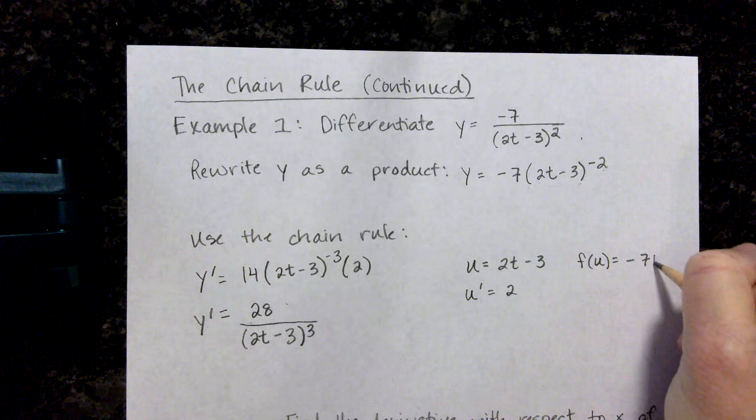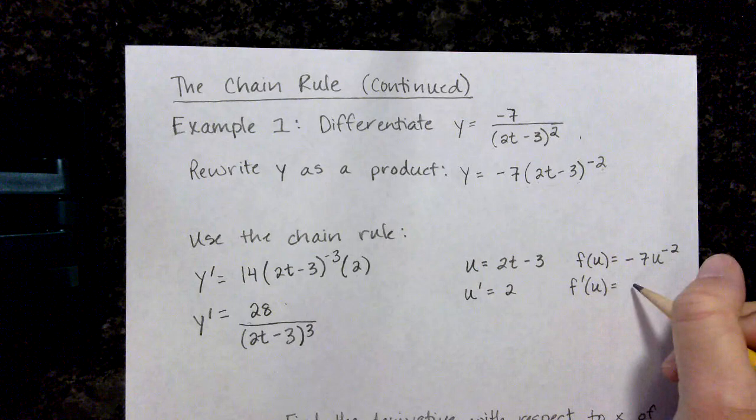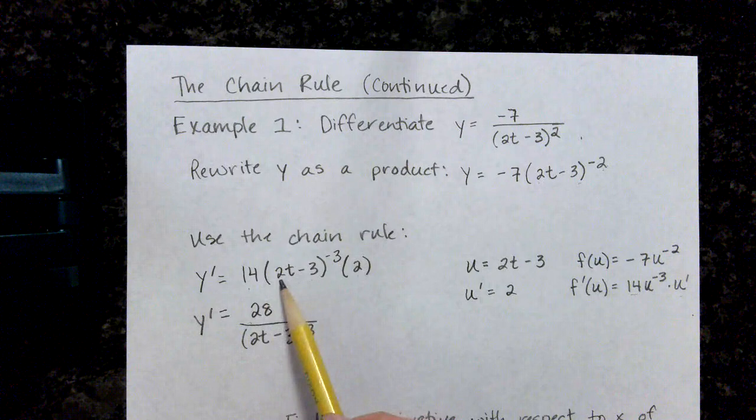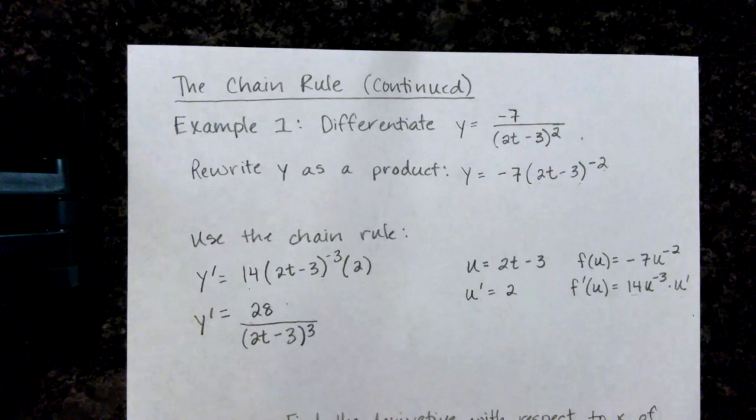Our f of u would be negative 7u to the negative 2. So our f prime of u would be 14u to the negative 3 times u prime. Now if we were to substitute that in we would have our 14u to the negative 3 times our u prime. So we get the same answer.